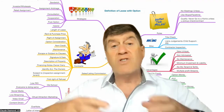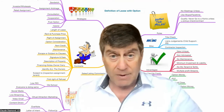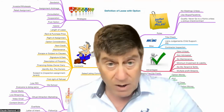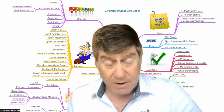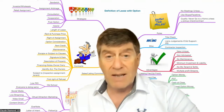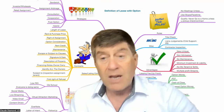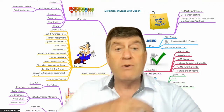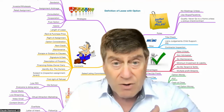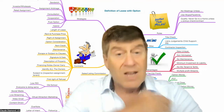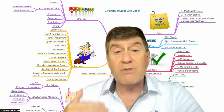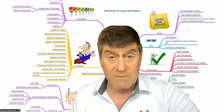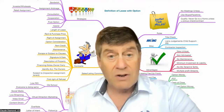Then you sublet the property and break it apart in a new contract with what we call a tenant buyer. You sublet the property for, let's say, one year, even though your original contract is three years. That means you can make three times the amount of money.